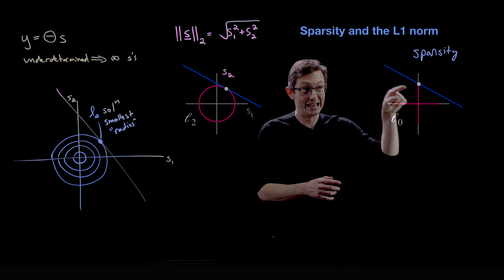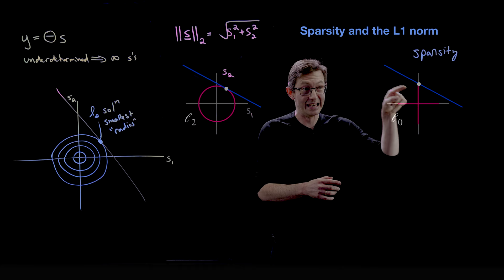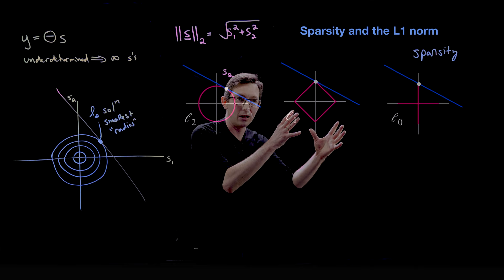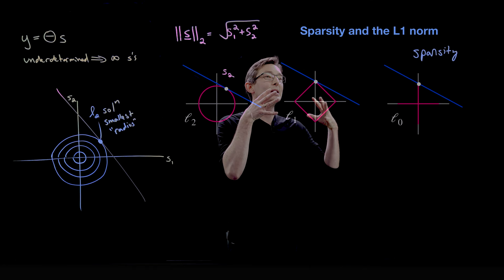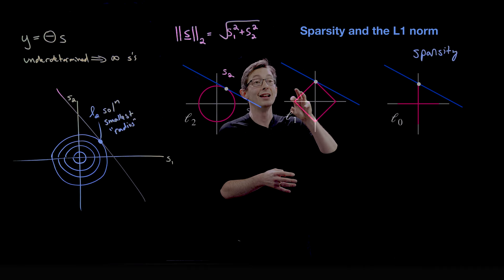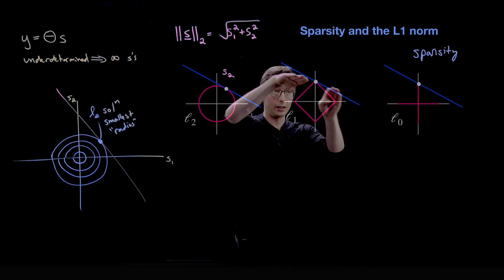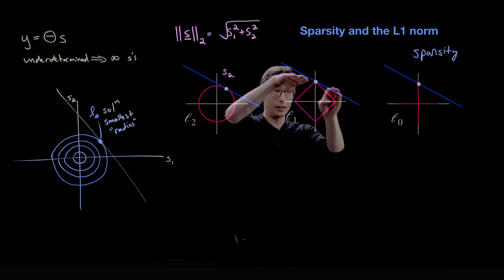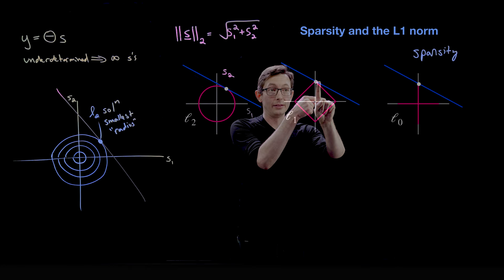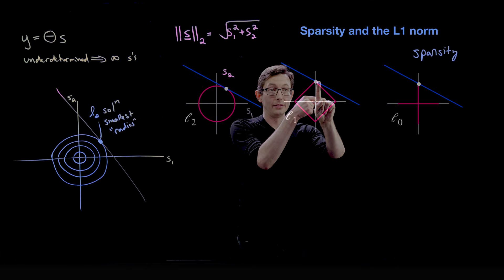Instead we use the L1 norm, which has gotten so much attention in recent decades because you can solve for the minimum one-norm solution in a convex way — meaning it scales to bigger problems efficiently. It also tends to give sparse solutions. If you grow these diamonds until they intersect the blue line, the first intersection will typically be at a sparse solution where s2 is nonzero but s1 is zero.